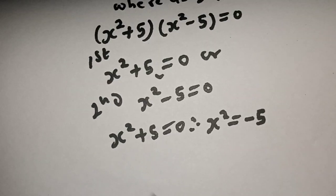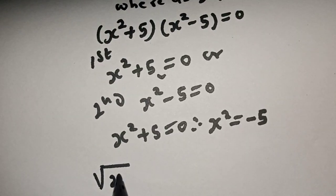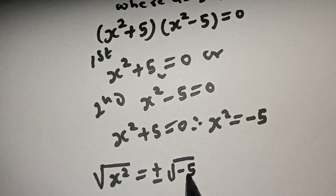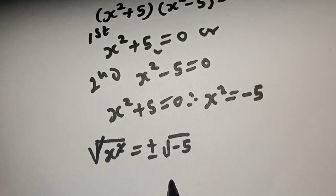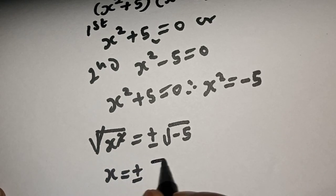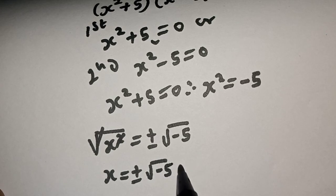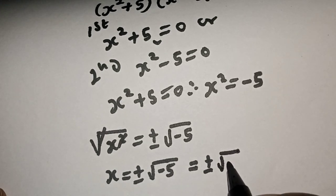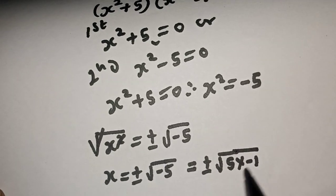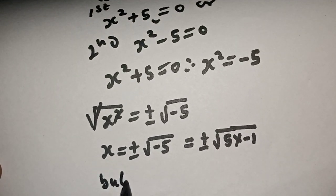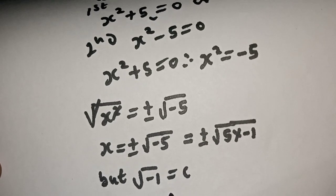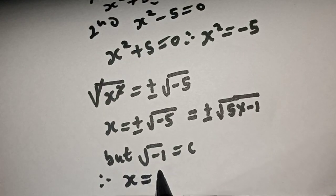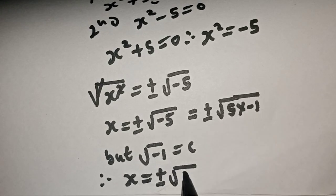Now let's take the square root of both sides. The square root of s square is equal to plus or minus the square root of negative 5. This cancels, so s is equal to plus or minus square root of negative 5. This can be written as plus or minus square root of 5 multiplied by negative 1, and square root of negative 1 is equal to plus or minus i square root of 5.